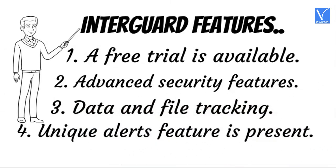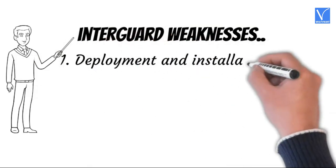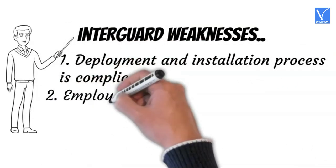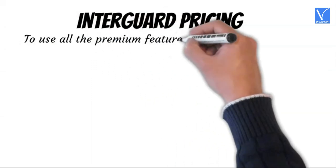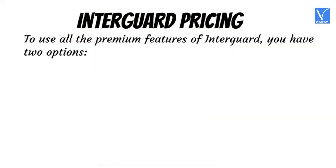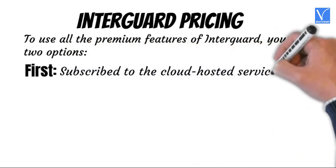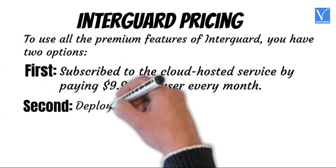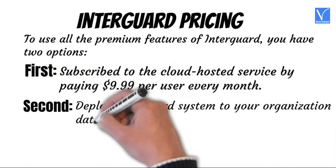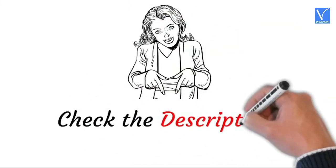InterGuard also has a unique alerts feature. InterGuard weaknesses: deployment and installation process is complicated, and employees may take time to get familiar with InterGuard settings and interface. InterGuard pricing: to use all premium features, you have two options. First, subscribe to the cloud-hosted service by paying $9.99 per user every month. Second, deploy InterGuard to your organization's data center by requesting a quote for their enterprise plan. Check the description for the product link.